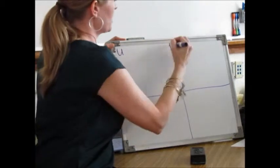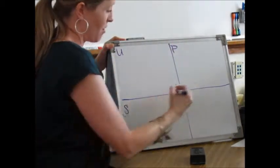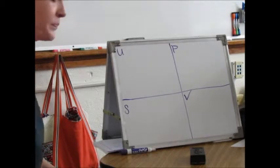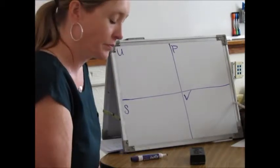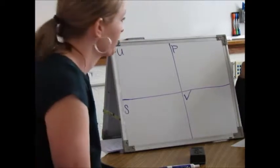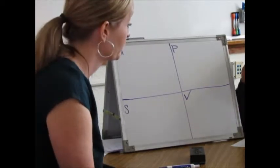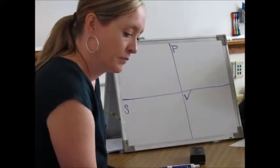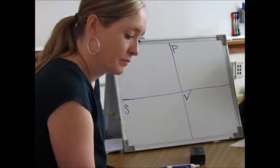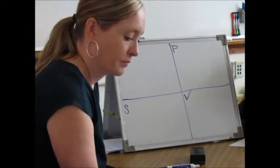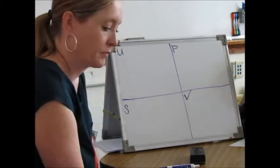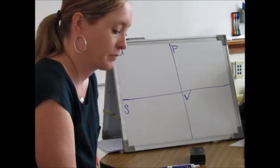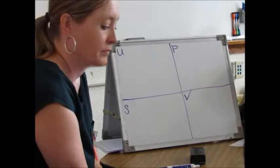All right — understand, plan, solve, and solve. All right, read me the problem. Martha has eight different kinds of tea in her pantry. Each kind of tea is in a different box, and there are 14 packets of tea in each box. Her friend Liz has the same number of tea packets. How many tea packets do they have all together?